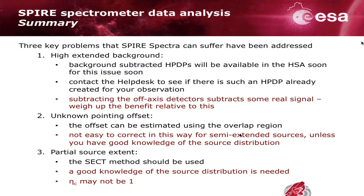To summarize: we looked at a source in high extended background for which there will be HPDPs soon — you can contact the help desk to see if one is already available. You must remember that subtracting off-axis detectors does subtract some real signal, and you need to weigh up the benefits against the loss. We also looked at pointing offsets using POCT to estimate the pointing offset, but it's not easy to use this method for anything other than a point source unless you have really good knowledge of the source distribution. For the semi-extended source, SECT is the correct method to use. You could try to code it up outside of HIPE, though it might be a little tough. Good knowledge of the source distribution is needed, and the coupling efficiency may not be one, so there can be extra errors associated with this method.